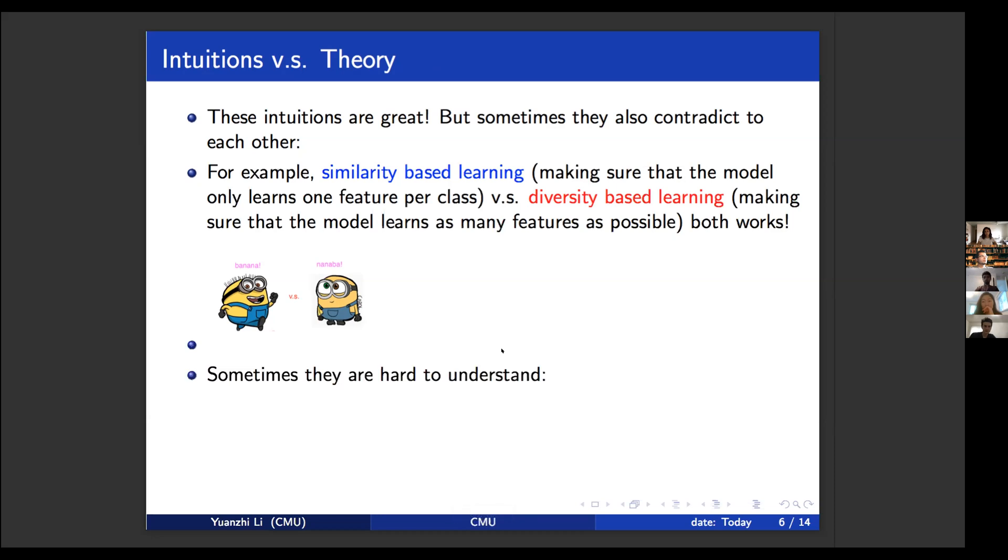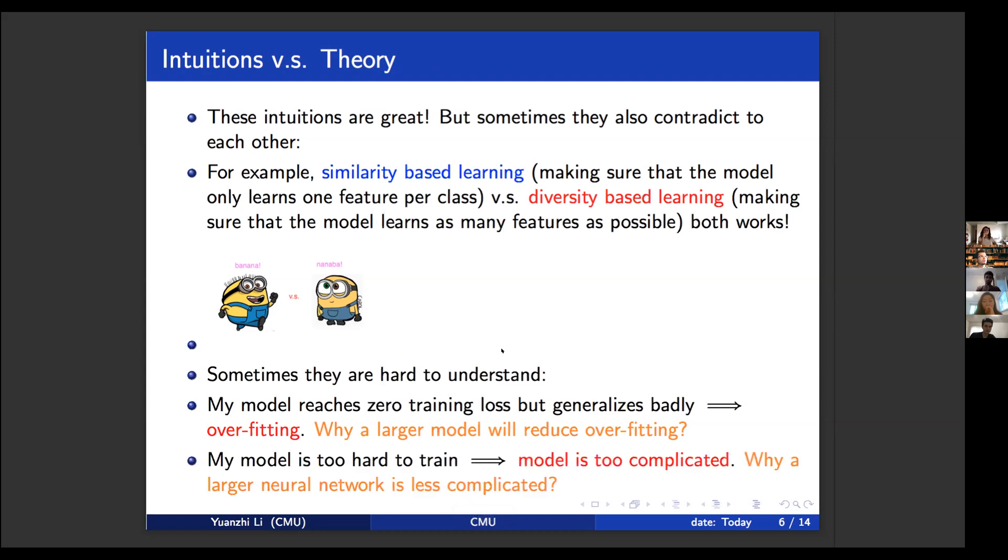And sometimes the intuitions are also very hard to understand. For example, when your model reached zero training loss but generalizes badly, this means overfitting. So why does a larger model reduce overfitting in deep learning? And your model is too hard to train means that the model probably is already too complicated. Then why is a larger neural net less complicated in deep learning? These intuitions are pretty hard to understand, but they work in practice.